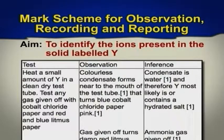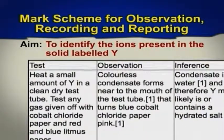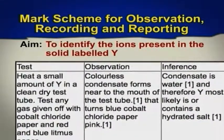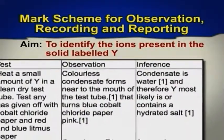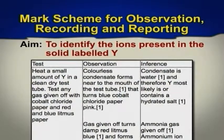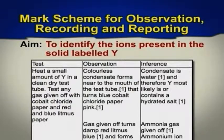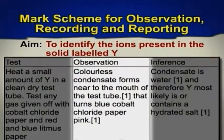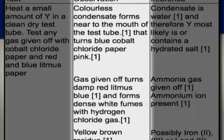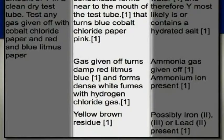Correct labeling of table with title written in capitals or underlined, columns having proper headings — one mark. Proper use of results table, particularly not repeating method in the observation column and observations in the inference column, and aligning as far as possible observations with relevant parts of the method and inferences with observations upon which they are based — two marks. Observations logically sequenced — one mark.